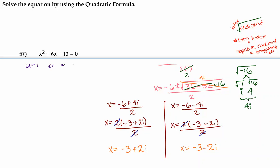So when we use the quadratic equation to solve this equation, it looks like the variable x can either be negative 3 plus 2i or negative 3 minus 2i. See you next time.